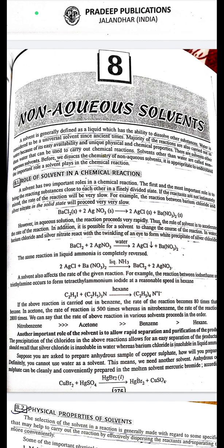In water, barium chloride and silver nitrate react instantaneously to form a white precipitate of silver chloride: BaCl₂ + 2AgNO₃ → 2AgCl + Ba(NO₃)₂. The same reaction in liquid ammonia is completely reversed: 2AgCl + Ba(NO₃)₂ → BaCl₂ + 2AgNO₃.